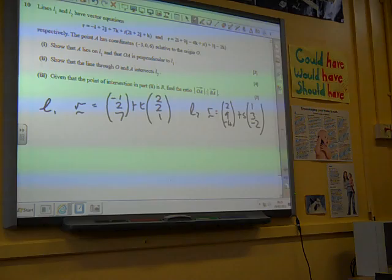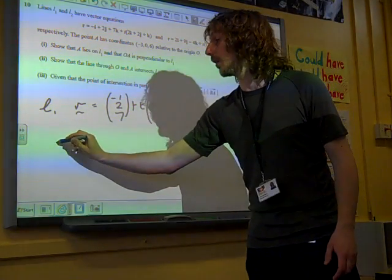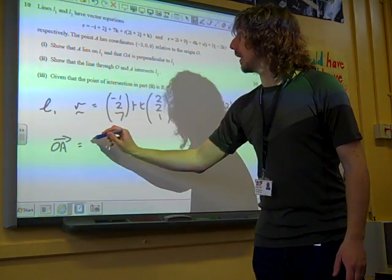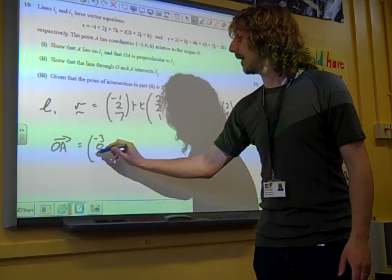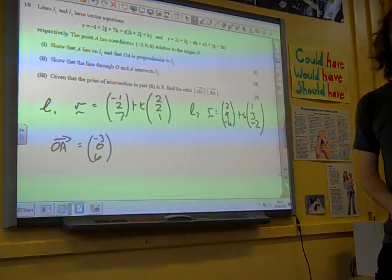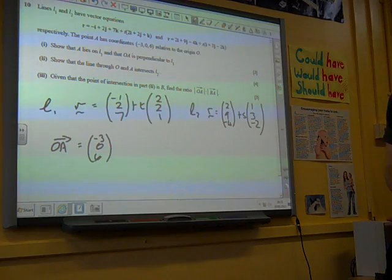We're also given that the point A has coordinates minus 3, 0, 6. So OA, the origin to A, is that vector there: minus 3, 0, 6.